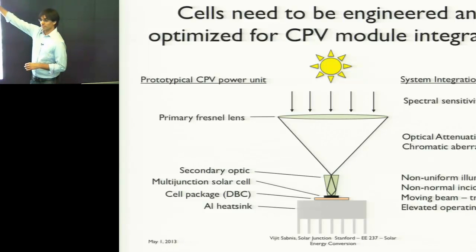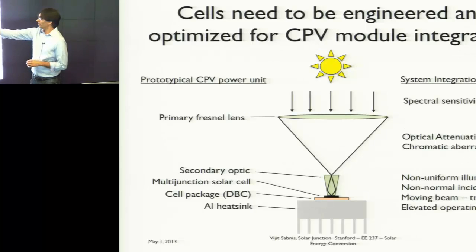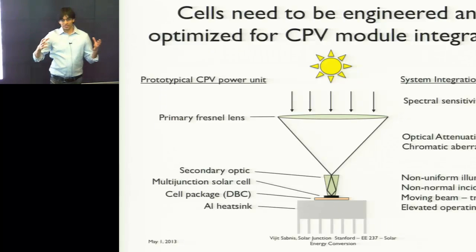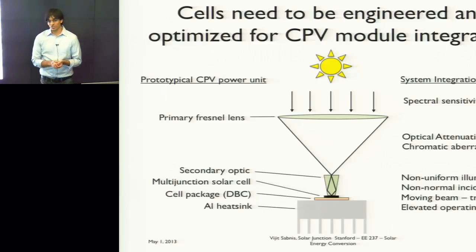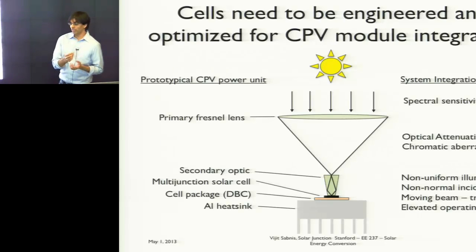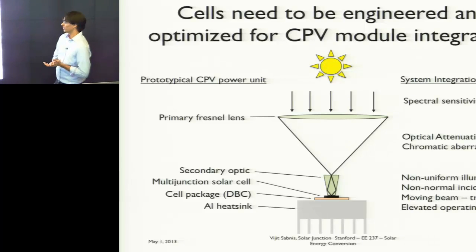One of the things you have to account for is changing sunlight throughout the day — that must be taken into account in designing your solar cells. Your optics are going to attenuate the light that ultimately hits your solar cell, so there's going to be a little bit of clipping in the UV and some infrared absorption, which affects the spectral content on your solar cell.